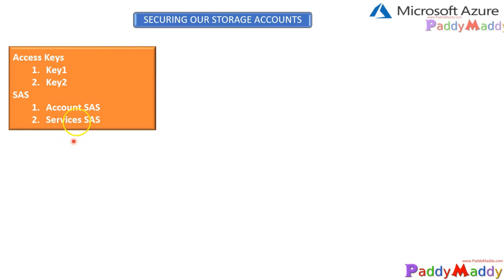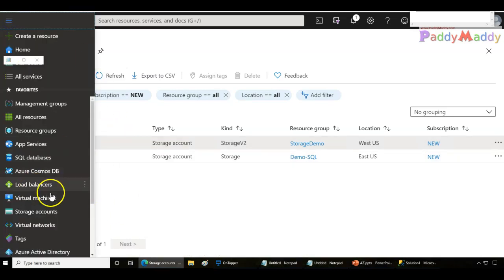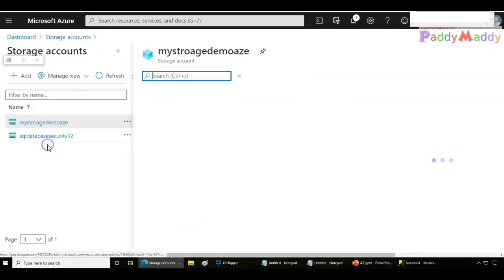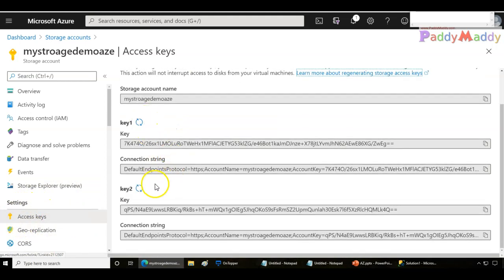The first option we have for securing our storage accounts is access keys. When we are referring to access keys, they are configured by default whenever we create a storage account. As soon as you create your storage account, two access keys get created and configured by default. From the Azure portal, if you go to settings and access keys, you have key one and key two — two different access keys with equivalent permissions.